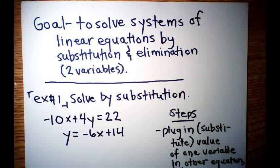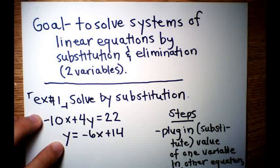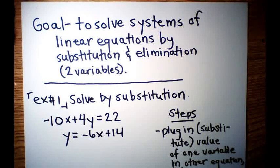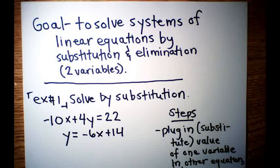Example number 1 — we're going to solve by substitution. Solving systems of linear equations just means that these two equations are lines, and we're trying to see where they intersect on the Cartesian plane, or the xy-plane. So your answer should be some sort of point, like (6, 4) or (−2, 3).